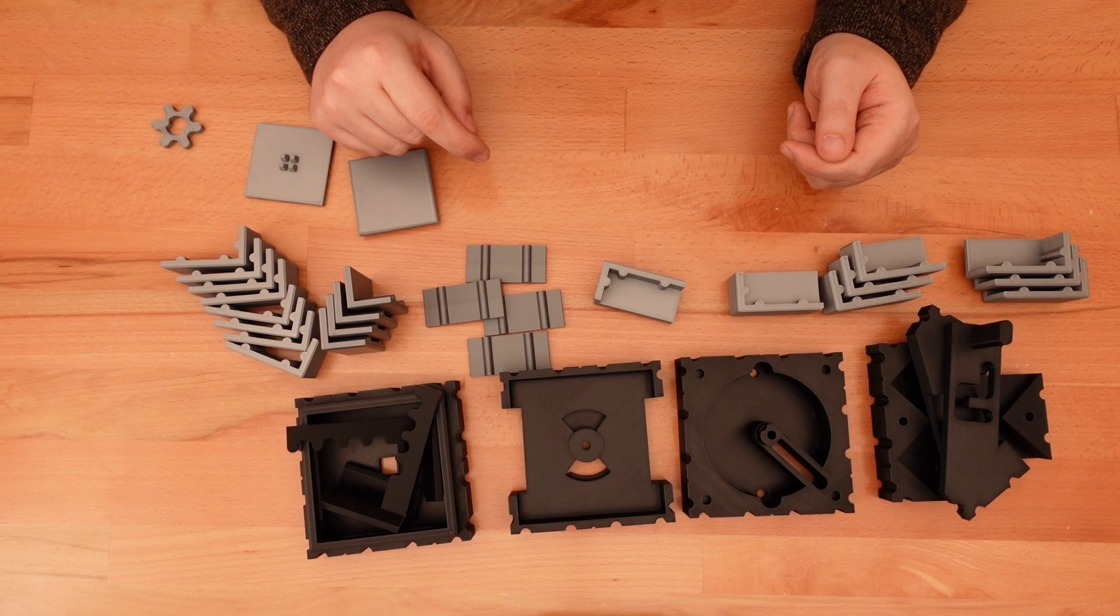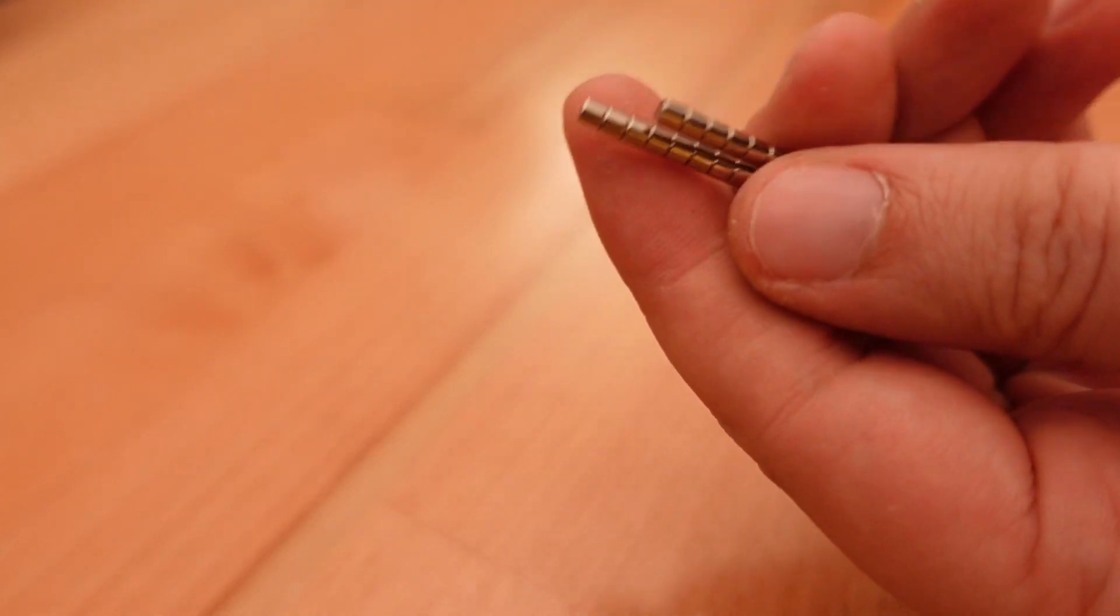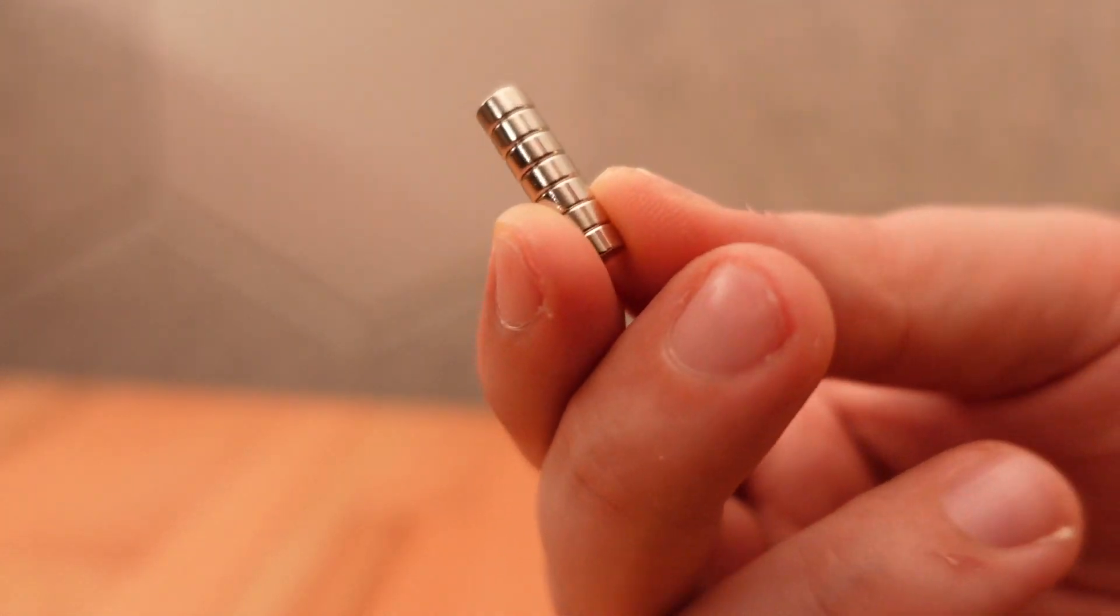The next bit is optional, but improves how the puzzle works. You'll need 15 cylinder magnets that are 3mm in diameter and 3mm tall. For this larger build, I'm switching this out to 6mm by 3mm magnets. Anything larger would probably be too strong.